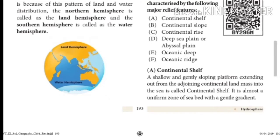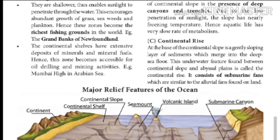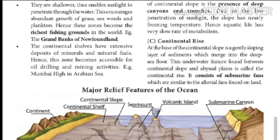First, the Continental shelf: a shallow and gently sloping platform extending out from the adjoining continental landmass into the sea is called the continental shelf. It is almost a uniform zone of seabed with a gentle gradient. Next, Continental slope: a steep slope which descends from the edge of the continental shelf to the deep ocean bed is called the continental slope. It forms a boundary between the continental crust and the oceanic crust, and this zone is free from deposits as it is steep. Next, Continental rise: at the base of the continental slope is a gently sloping layer of sediments which merges into the deep sea floor. This underwater feature found between the continental slope and abyssal plain is called the continental rise. It consists of submarine fans similar to the alluvial fans found on land.